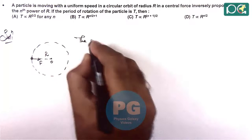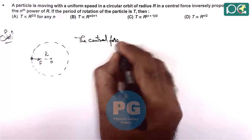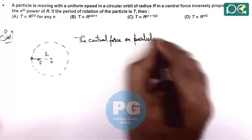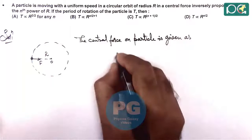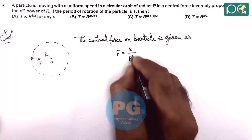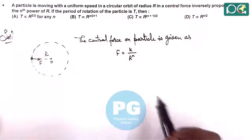And here it is given that the central force on the particle is given as k by r to power n, because it is given that it is inversely proportional to nth power of r.